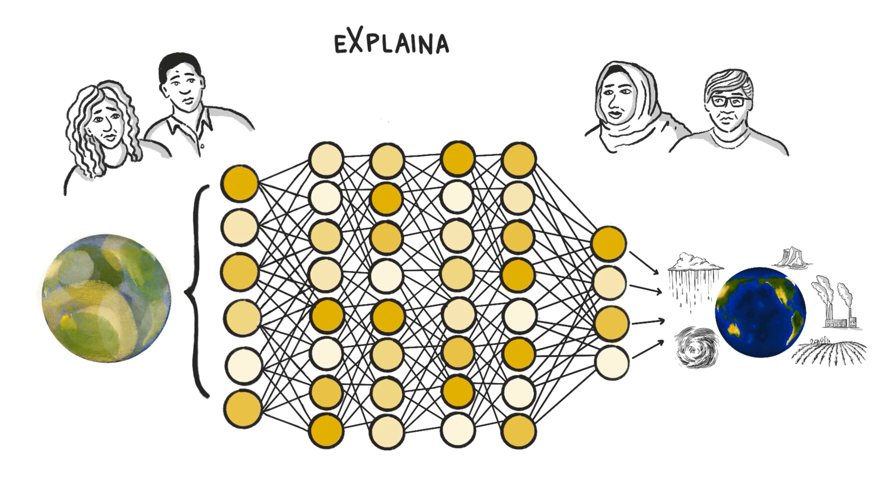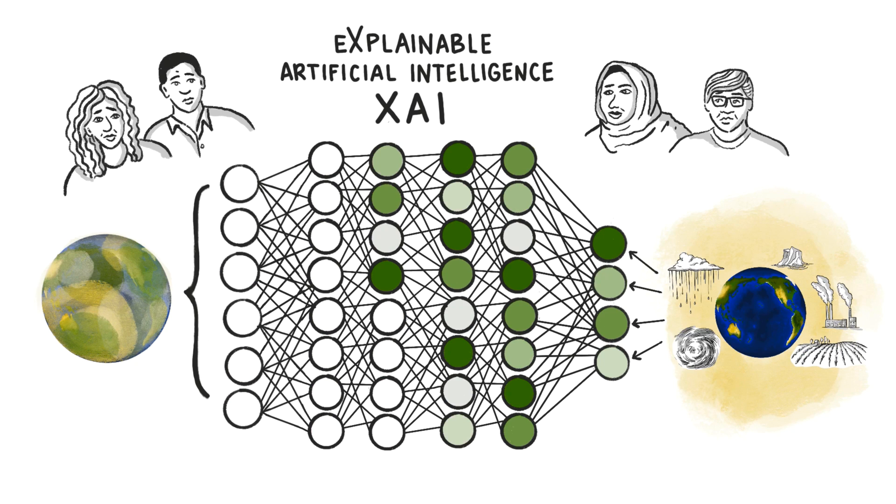In recent years, scientists have started using methods of explainable artificial intelligence, or XAI, to explain the predictions of AI models. These methods propagate information backwards through the network, starting with the prediction and deciphering the network's decision-making process along the way. The goal of XAI methods is to highlight which features in the input were the most important for the network's prediction, which helps the scientists gain insight about the model's strategy.